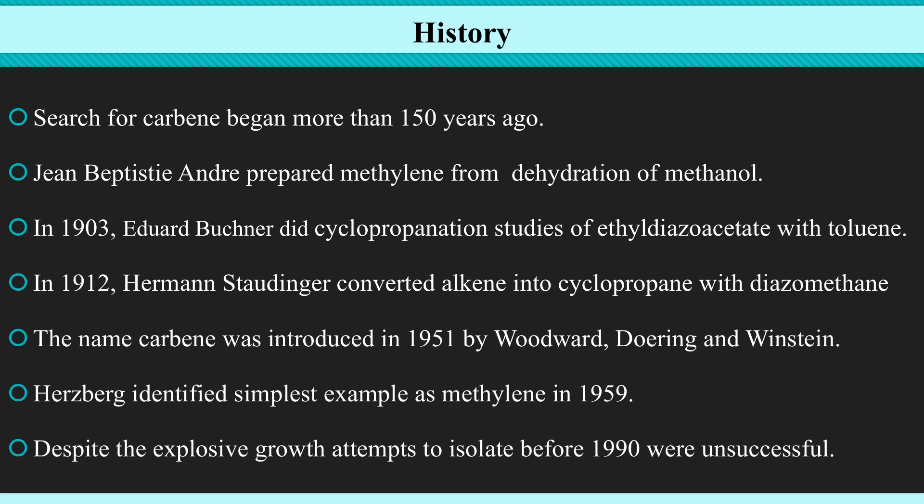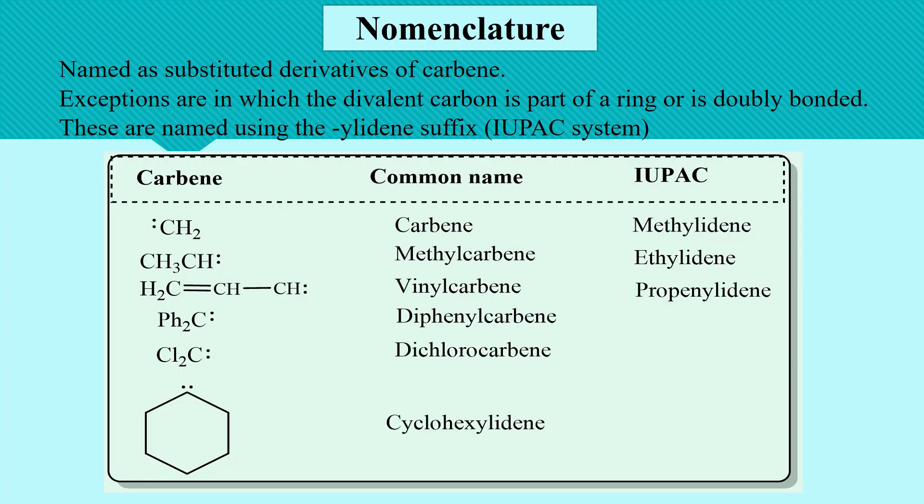In 1903, Edward Buchner did cyclopropanation studies of ethyl diazoacetate with toluene. In 1912, Hermann Staudinger converted alkene into cyclopropane with diazomethane. The name carbene was first introduced in 1951 by Woodward, Doering and Winstein. Then Herzberg identified the simplest example as methylene in 1959. Despite the explosive growth, attempts to isolate them before 1990 were unsuccessful. Nowadays the term is universally used for divalent carbon species.